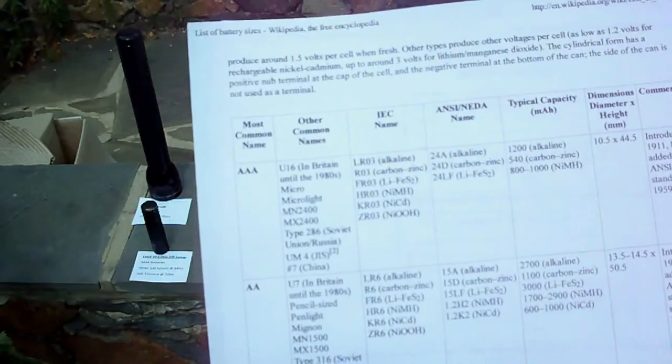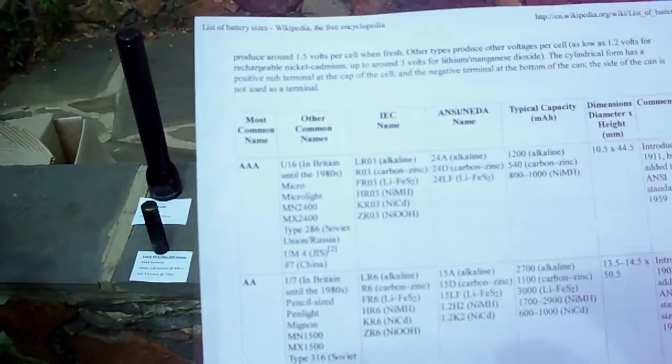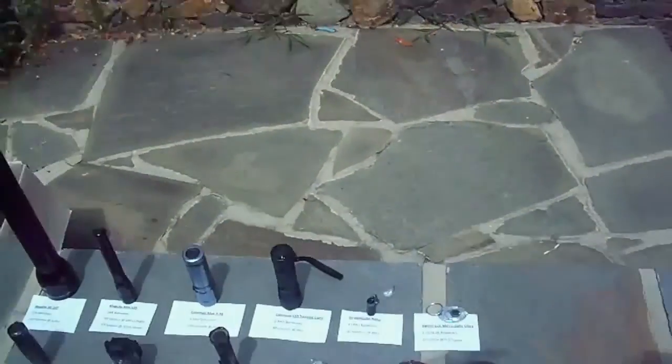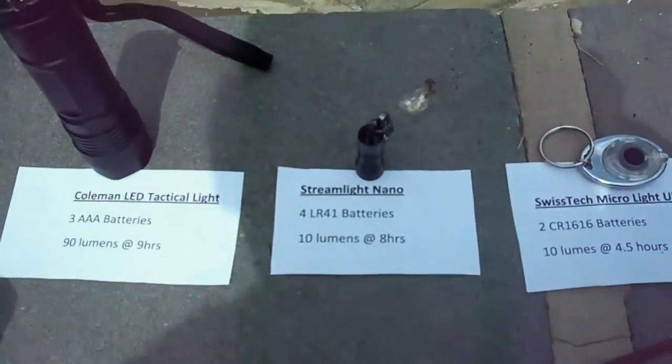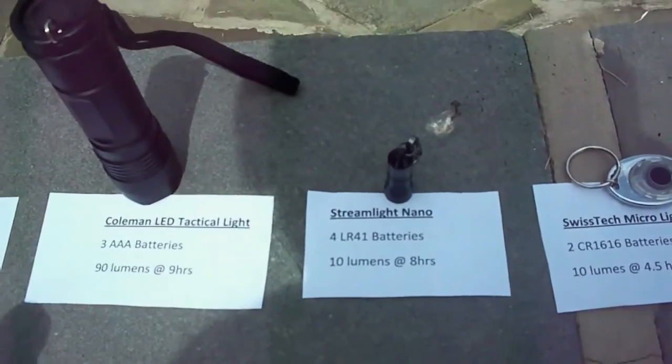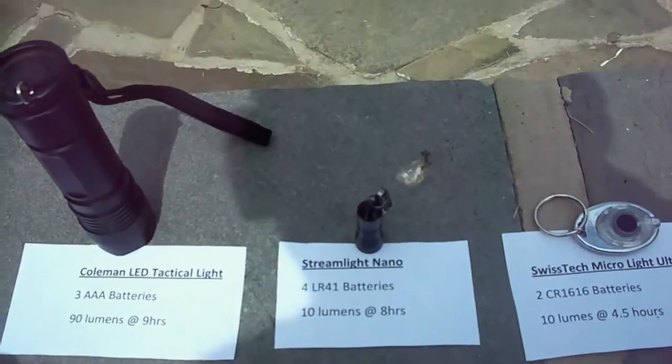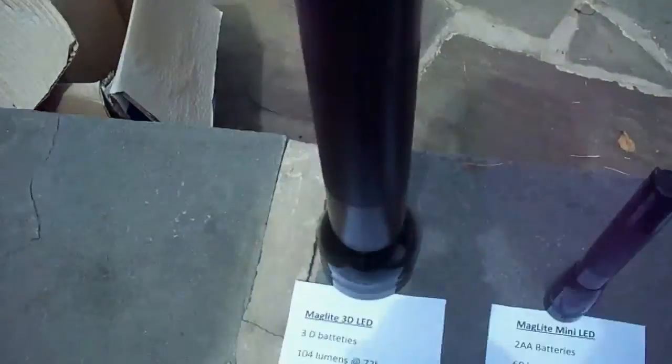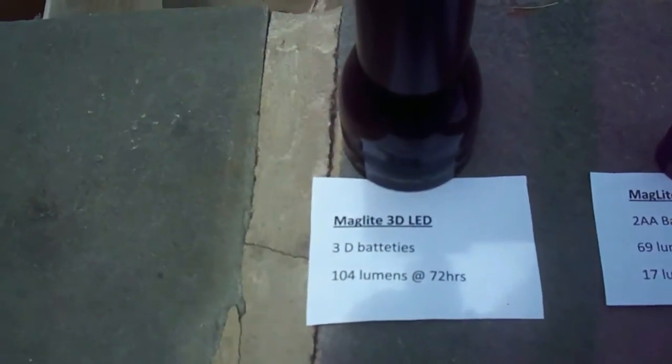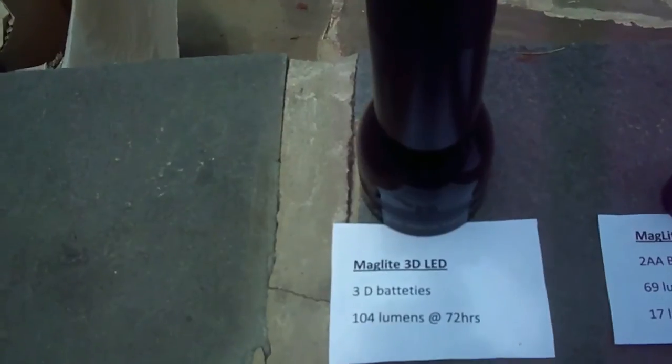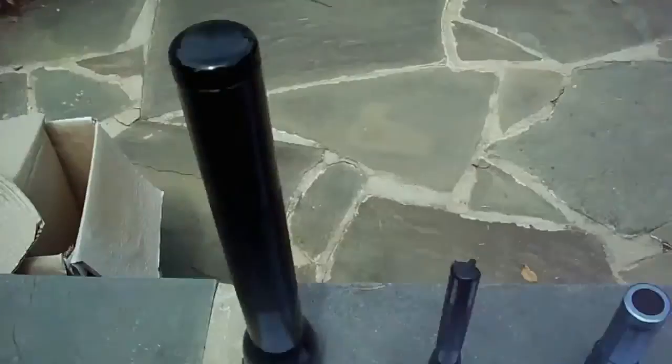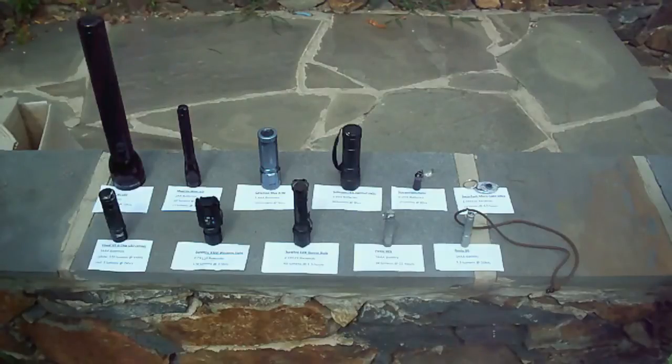The larger the battery, the longer it's going to run. To give you a perspective, this Streamlight Nano uses four LR41 button cell batteries and it only runs for eight hours, compared to this Maglite which uses 3D batteries and runs for 72 hours. That's a big difference guys.